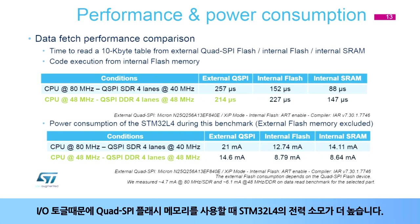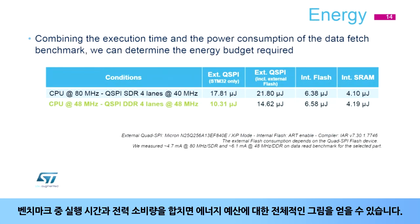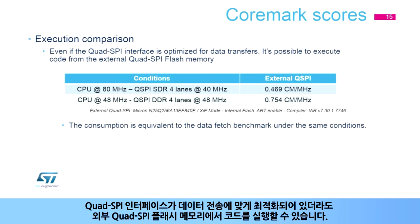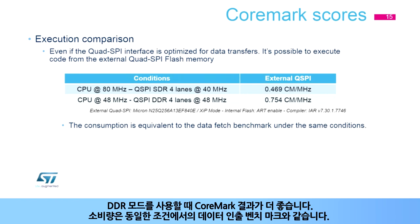The STM32L4's power consumption is higher when using the Quad SPI flash memory because of I/O toggling. Combining the execution time and the power consumption during the benchmark, we can obtain an overall picture of the energy budget. The DDR mode is the most optimized in terms of energy consumption for a given task. Even if the Quad SPI interface is optimized for data transfers, it's possible to execute code from the external Quad SPI flash memory, and the CoreMark results are better when using DDR mode.